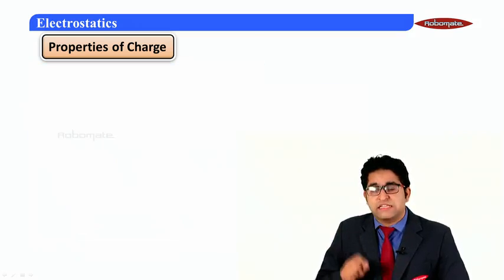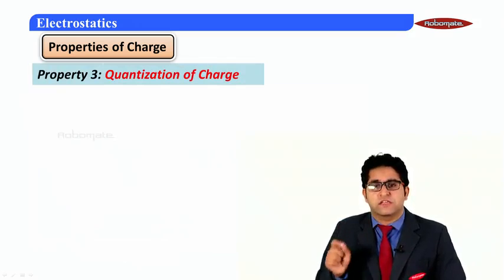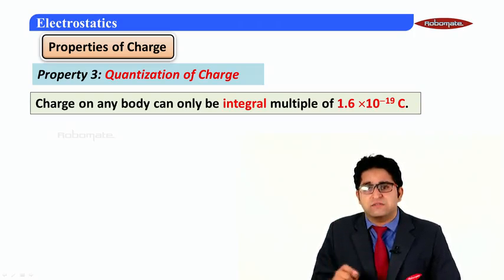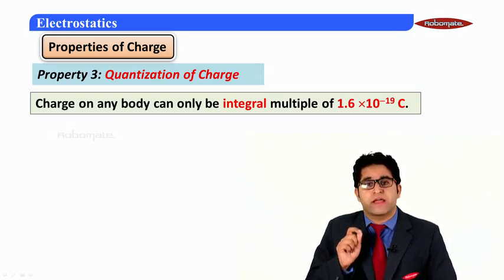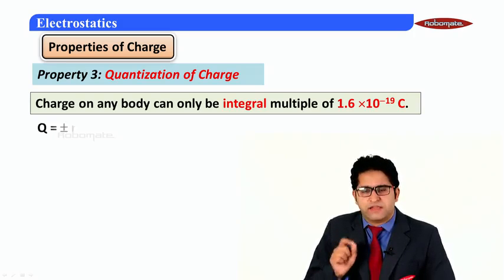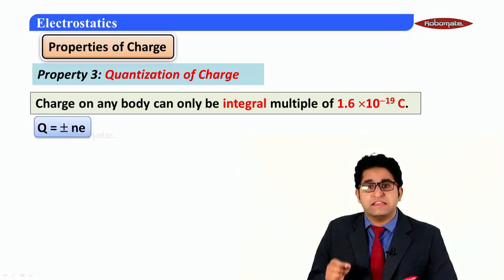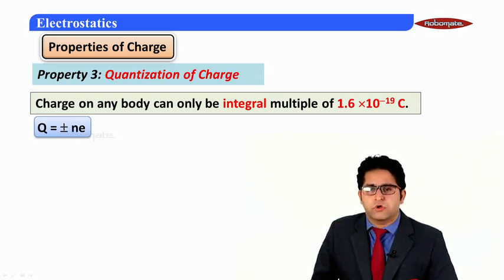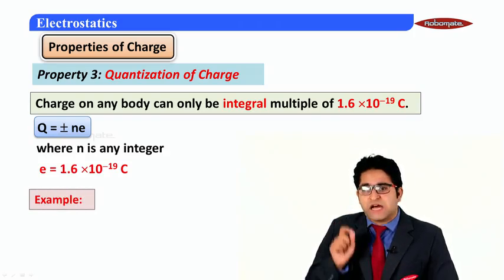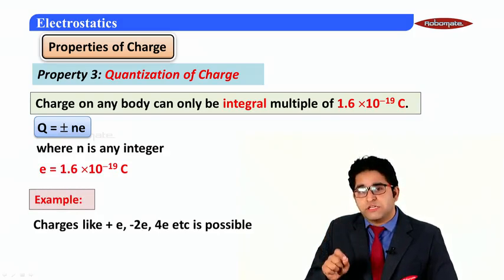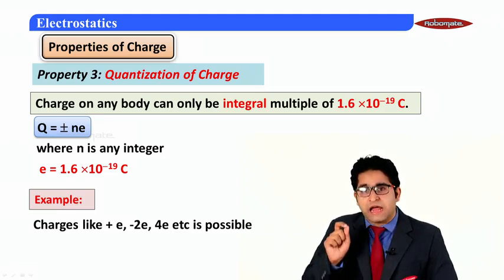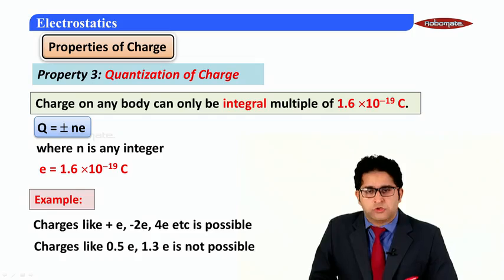The third property is quantization of charge. It states that charge on any body can only be an integral multiple of 1.6 × 10⁻¹⁹ coulomb. Any charge can be written as Q = ±ne, where n is any integer and e = 1.6 × 10⁻¹⁹ coulomb is the fundamental charge. So charges like +e, −2e, +4e are possible, but charges like 0.5e or 1.3e are not possible.